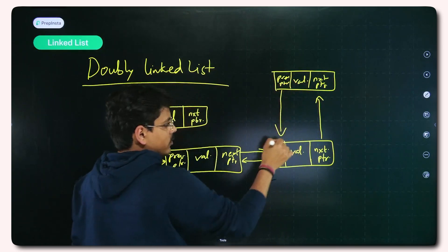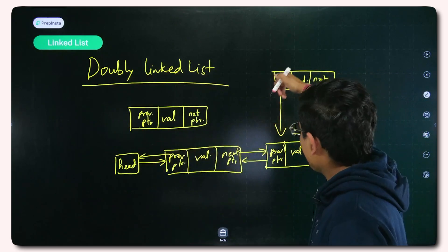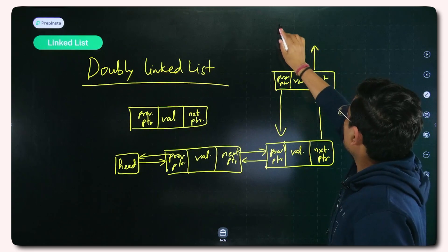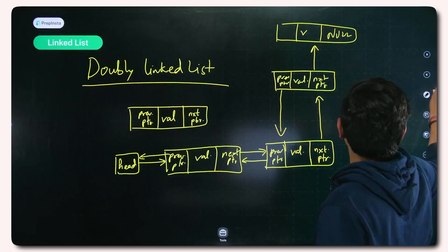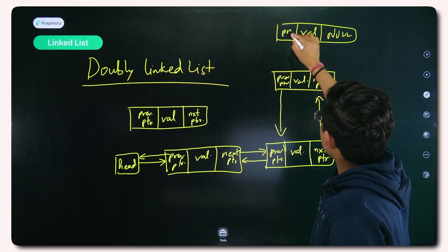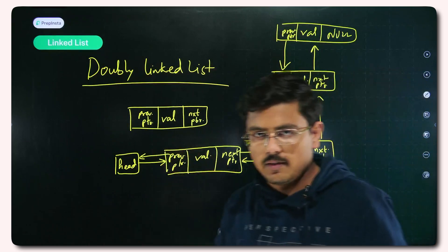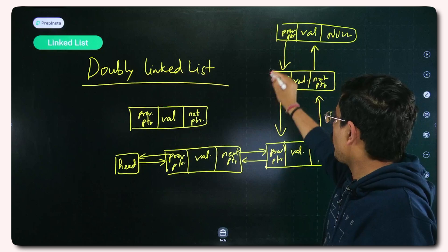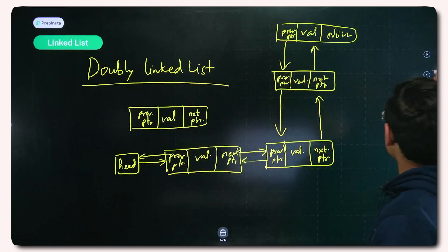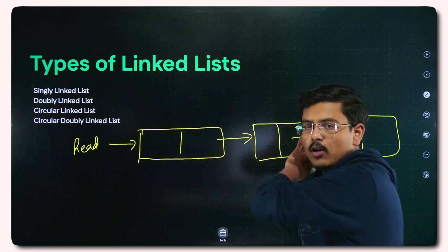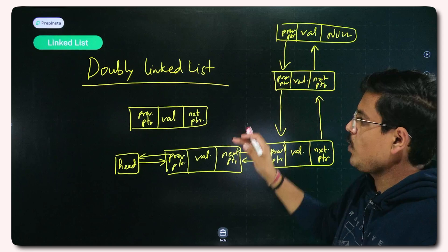The previous pointer in each node is actually pointing back to the preceding node. This means every time you have backward tracking — you can go backwards. If you go further to a node where the next pointer is null, that is the last node of the doubly linked list. The benefit is that if you are standing at the last node and want to reach back to a previous node, you can straightaway use the previous pointer. This is not possible in singly linked lists because there is no backtracking option.